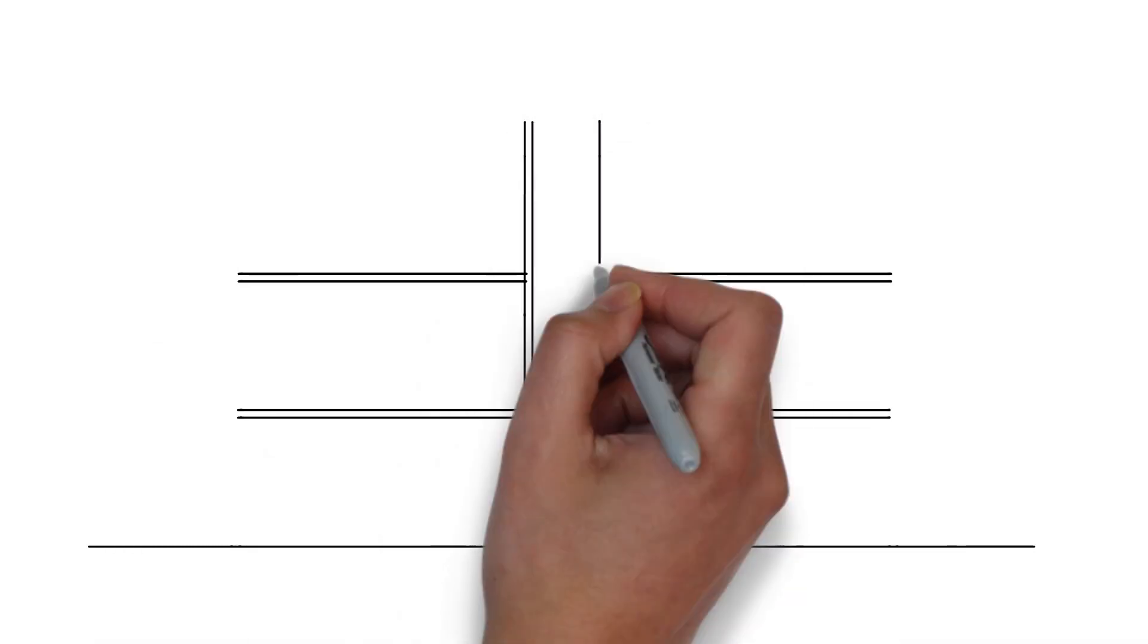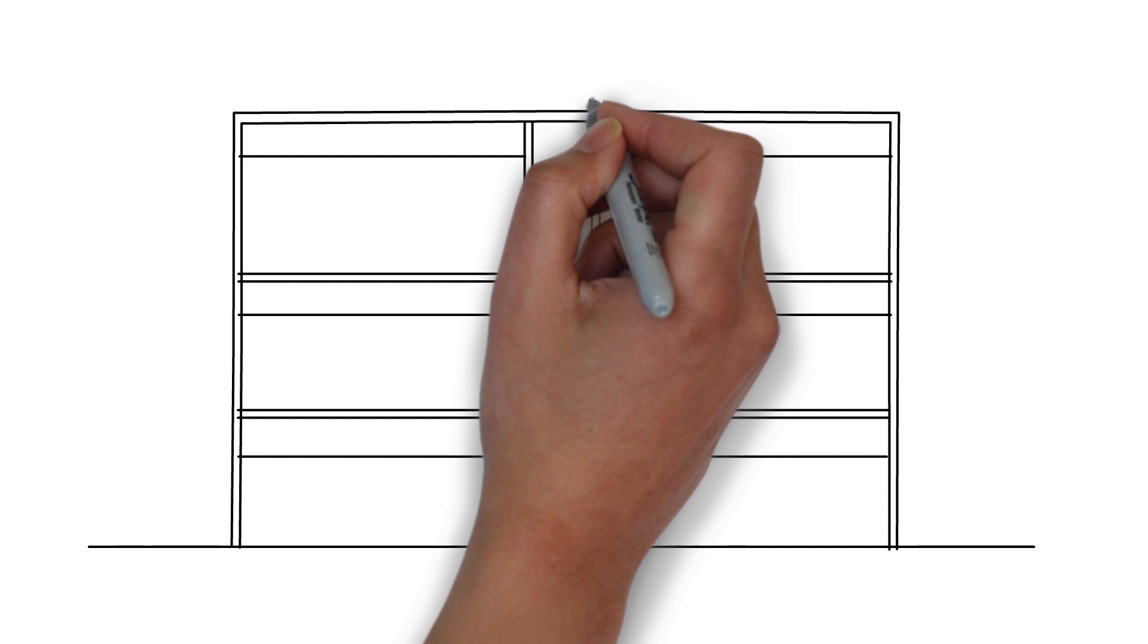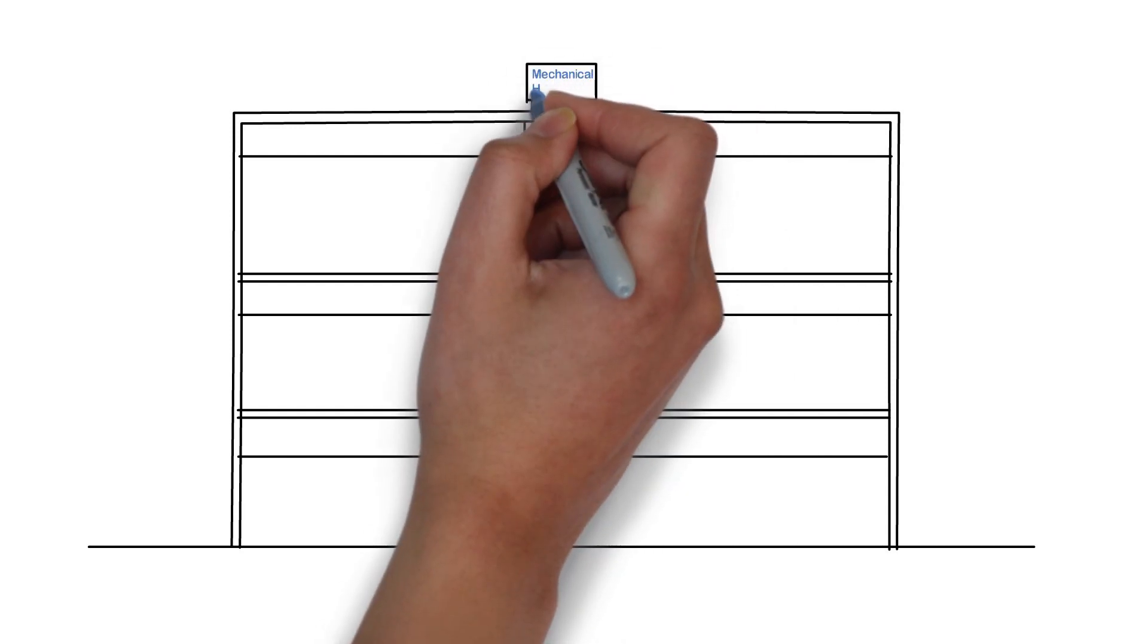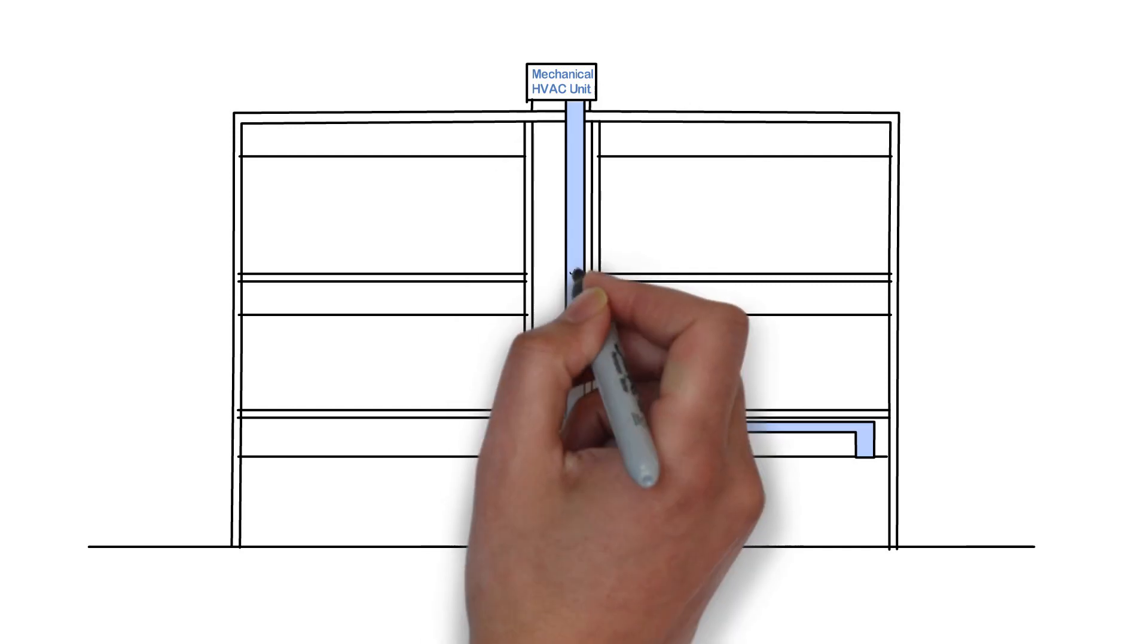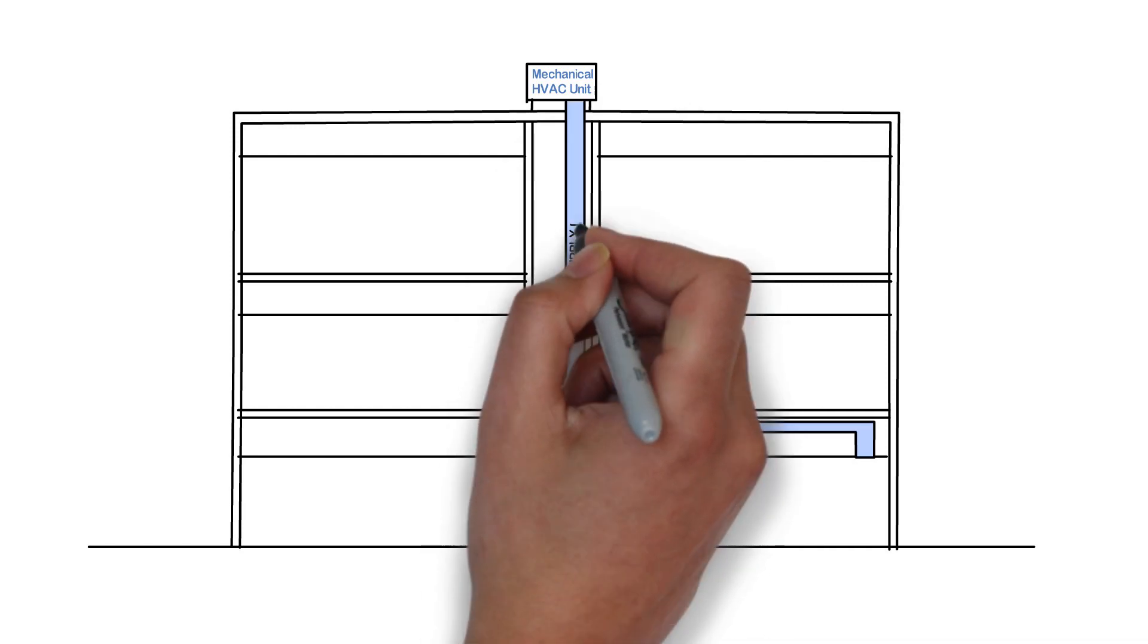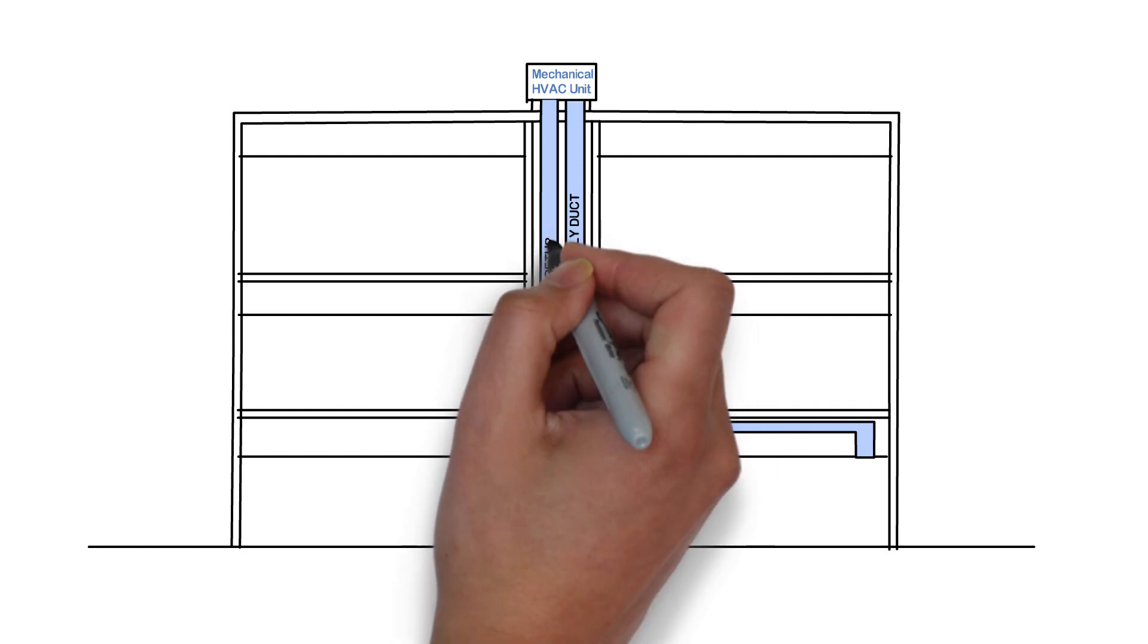To begin with I want to show you one example of a typical building and then we will go from there. Here we have a building with a mechanical unit on the roof. Normally there are more than one units but for this example let's just look at one unit. This unit has a supply duct that supplies air to the space and also a return duct that returns air to the unit.